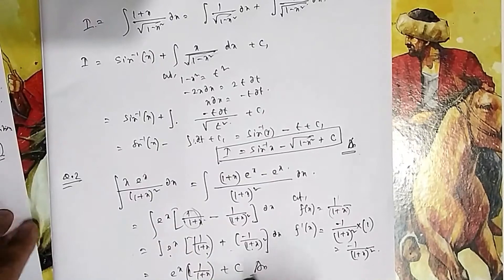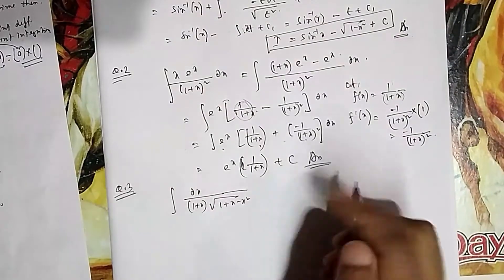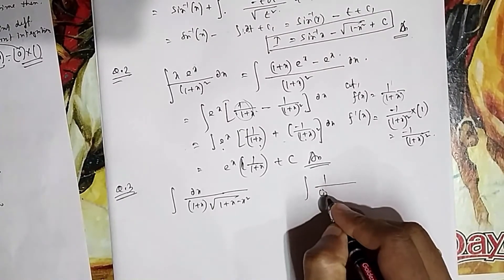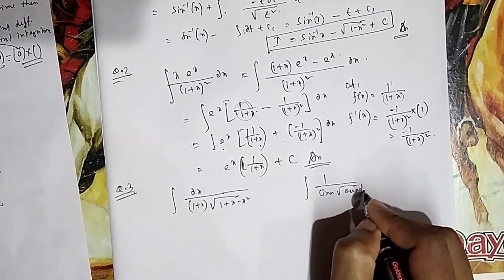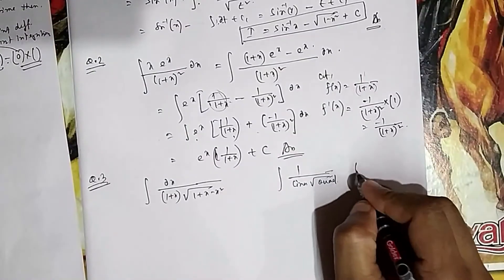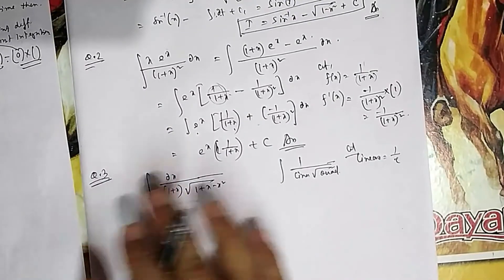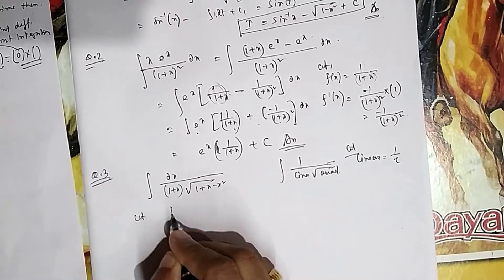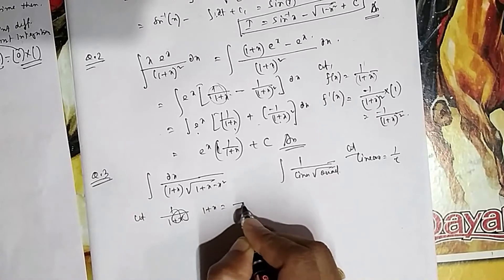In question number three, this is a rational fraction of the form linear over root of a quadratic — the 'linear root quad' format. For this type, the substitution is: let the linear part 1/(1+x) = 1/t, meaning 1+x = 1/t.